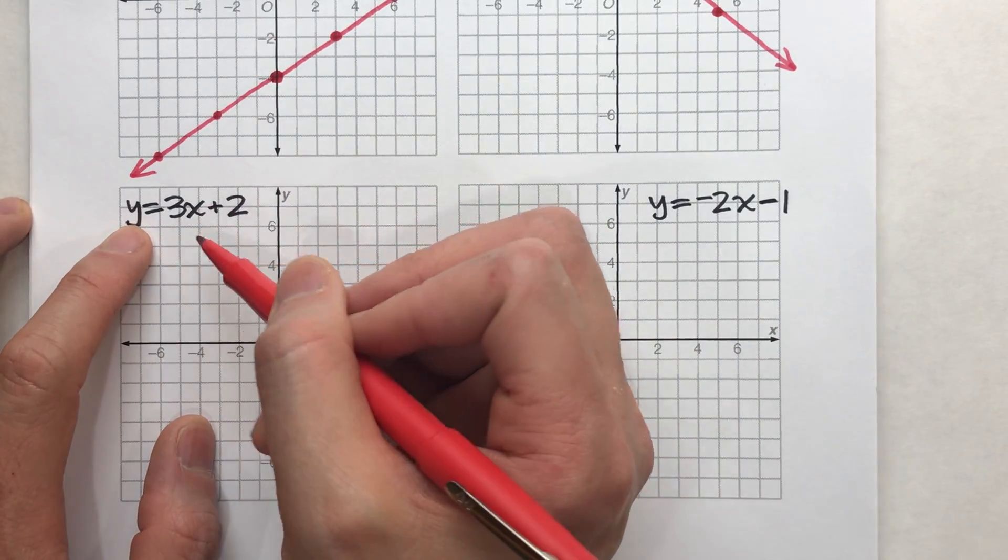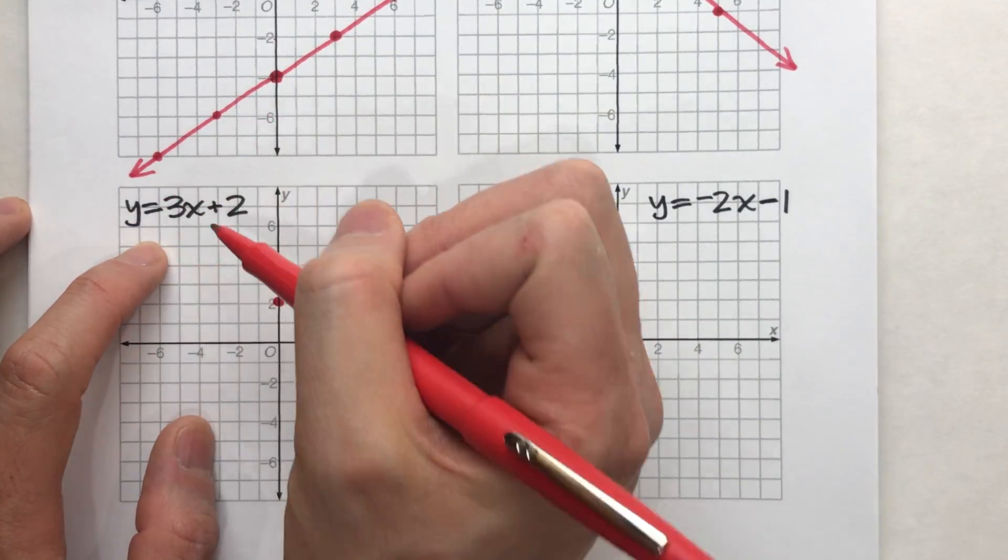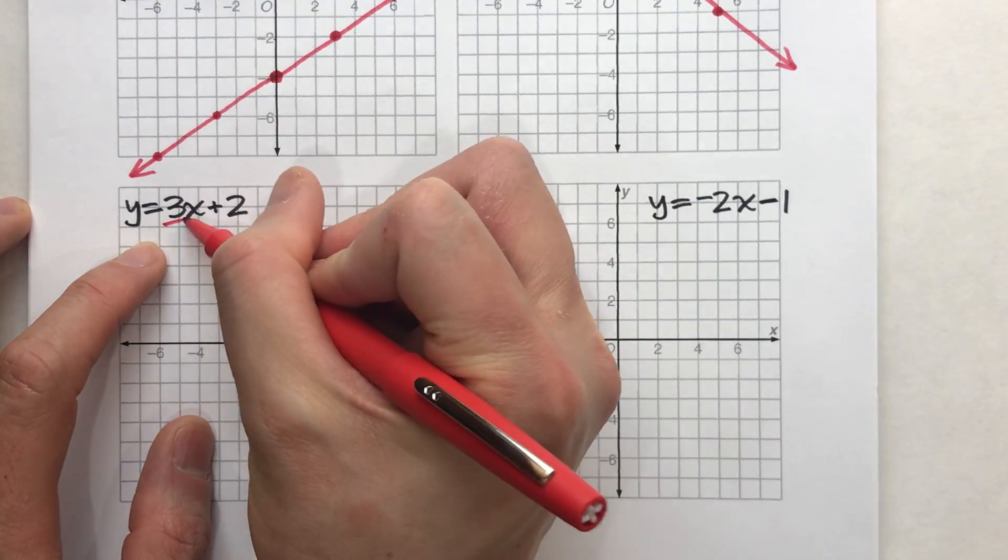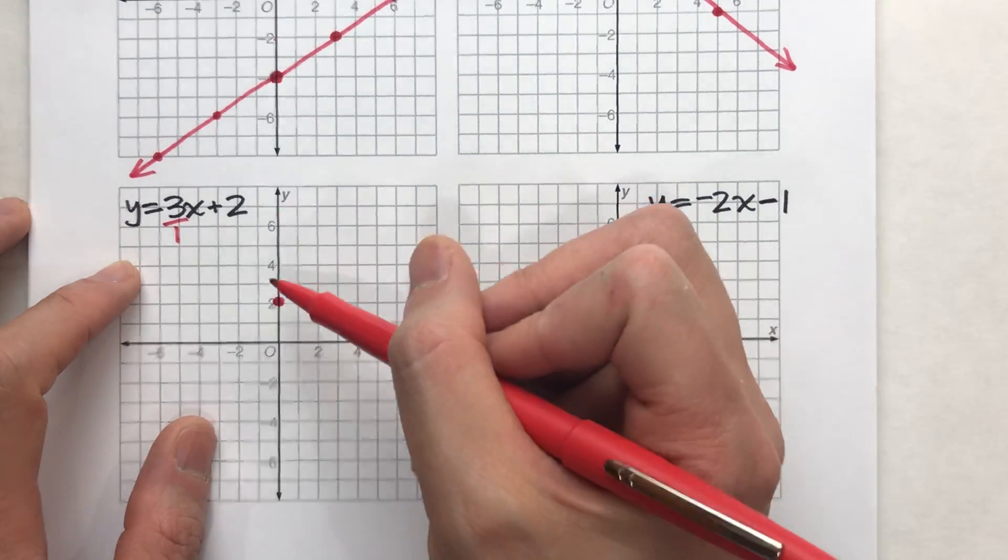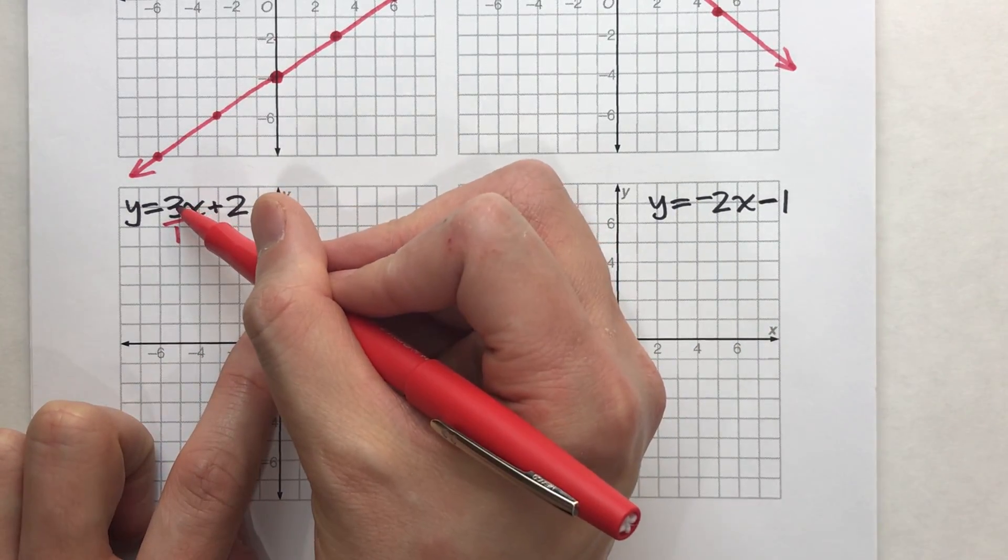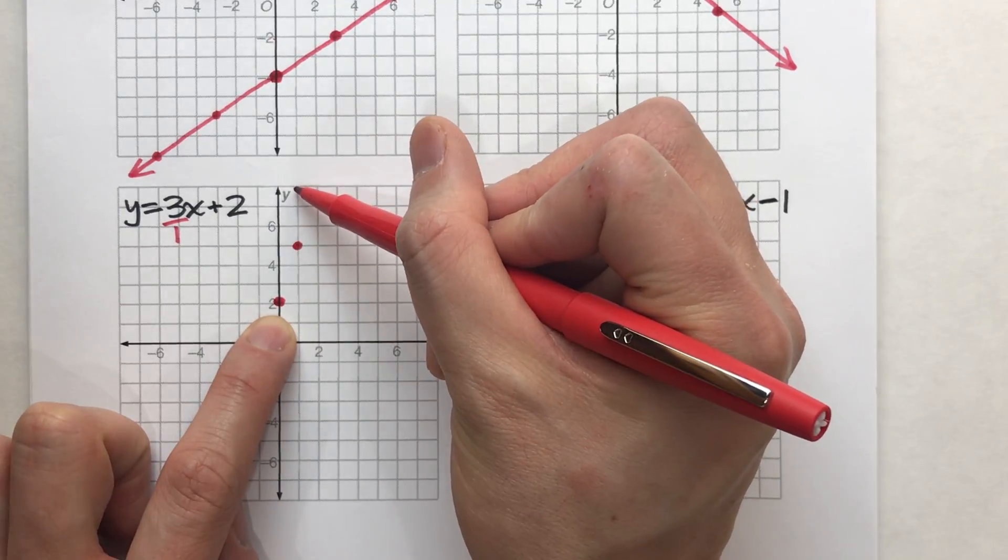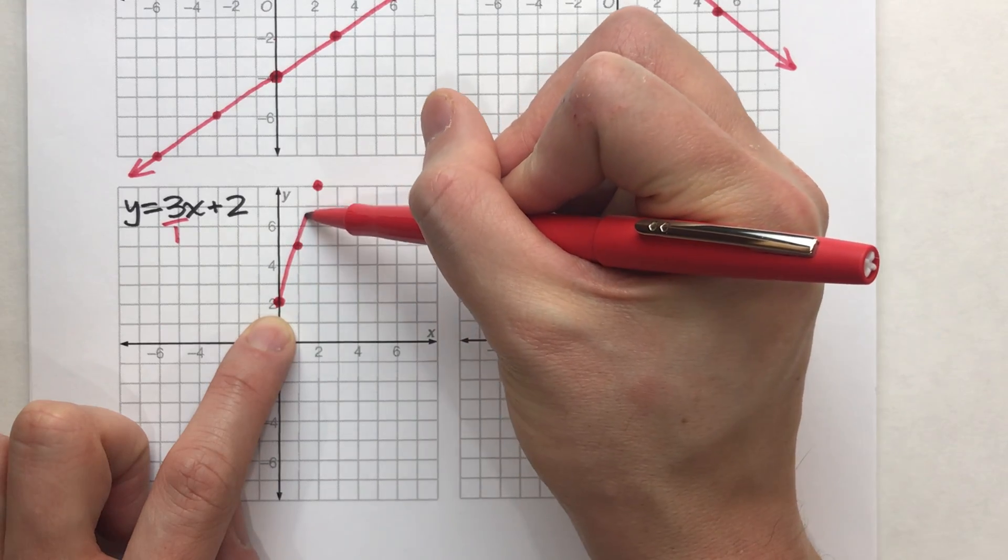Now, my slope is three, but we're used to having a fraction. So I'm going to change this whole number into a fraction. And you can change any whole number to a fraction by putting it over one. But that makes it a lot easier to graph. So from there, I can go up three, right one, plot a point. Up three, right one, plot a point. And continue forever in that direction.